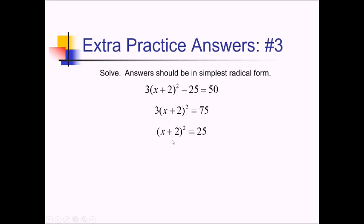Now I can square root both sides. If I square root the left side, that just gives me x plus 2 with no square. On the right side, I'm going to have a 5, but since I'm square rooting an equation, I have a positive and negative root, so that's really plus or minus 5. And to get x truly by itself, let me subtract 2, so I can write this as negative 2 plus or minus 5. So negative 2 plus 5 gives me positive 3, and negative 2 minus 5 gives me negative 7. Those are my two solutions.